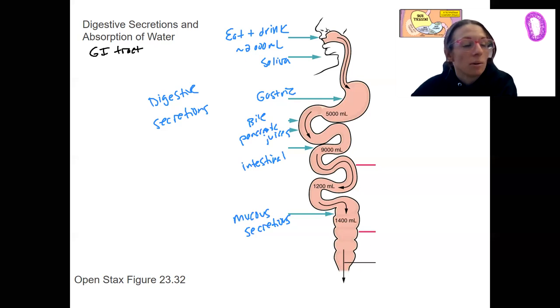You can see there's already numbers written in my intestine there, so you could do the math. I'm not going to test you on the math. By the time we get to gastric, we've got these three components added together. Bile, pancreatic, and intestinal are going to add another 4,000 milliliters to get to 9,000. And then our mucus secretion is just about 200 milliliters.